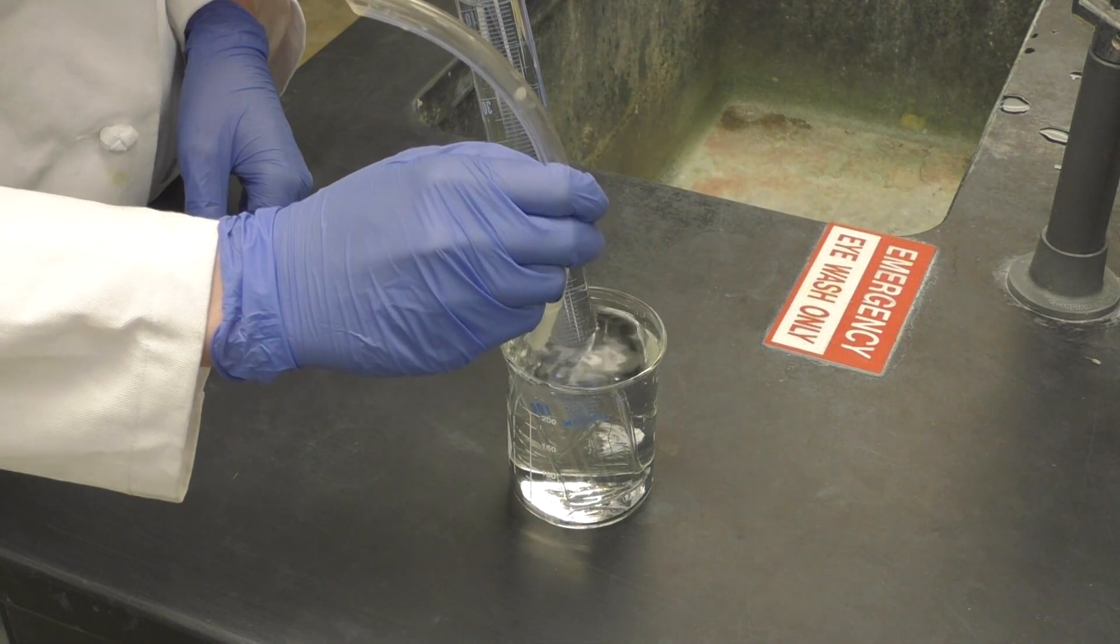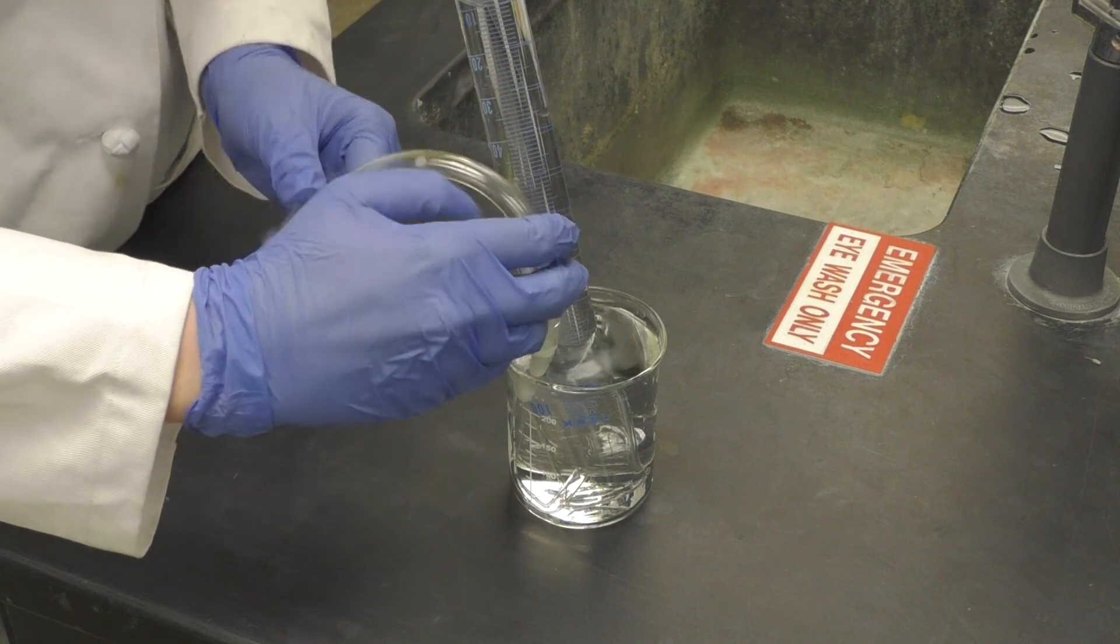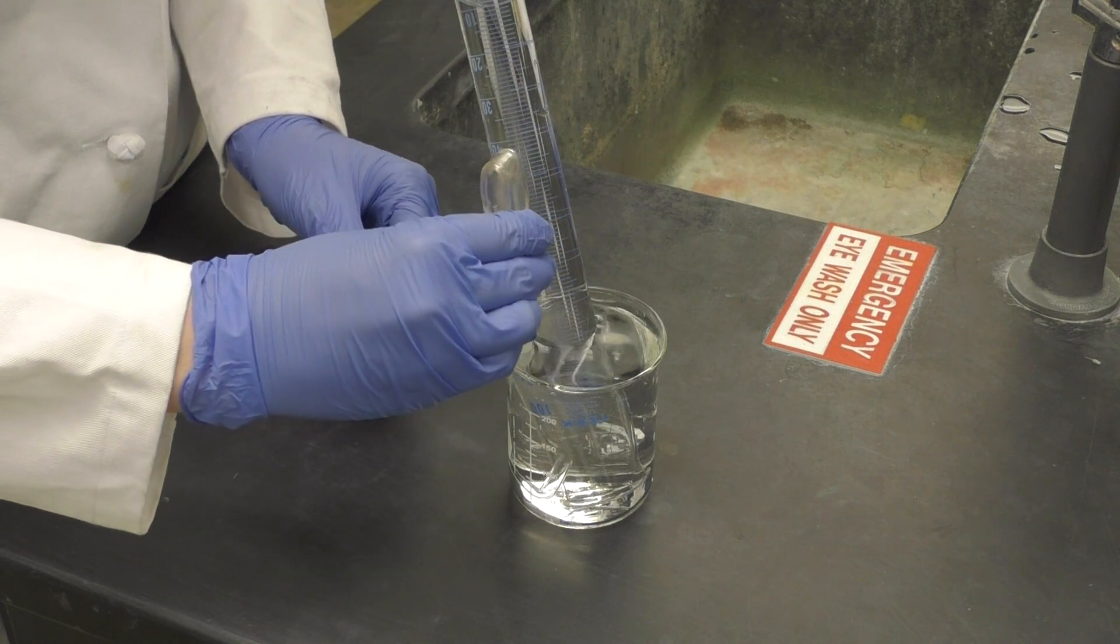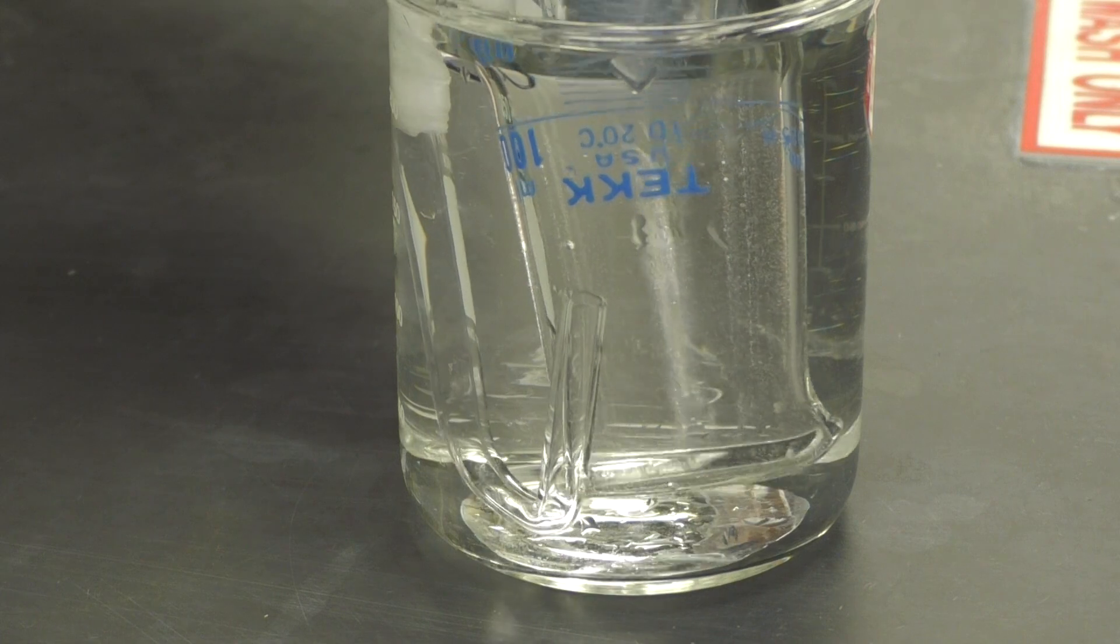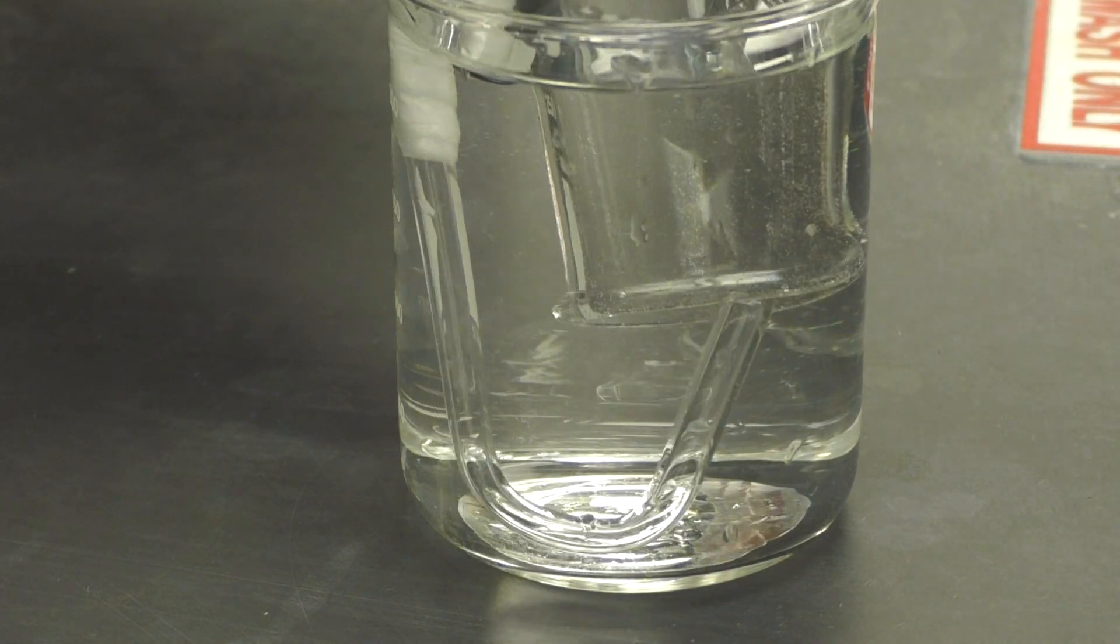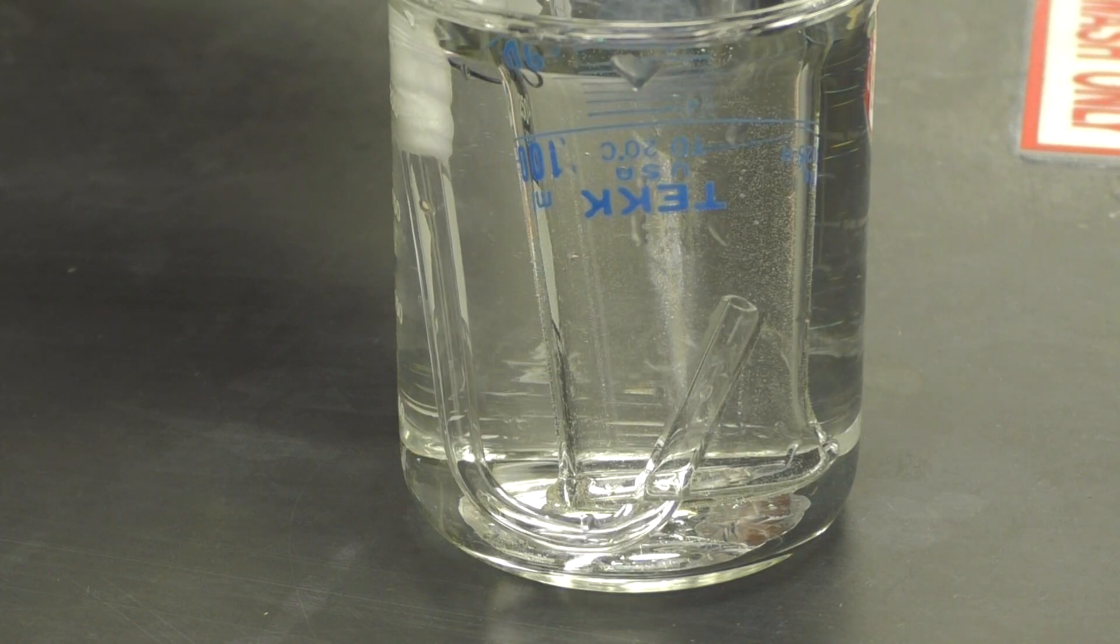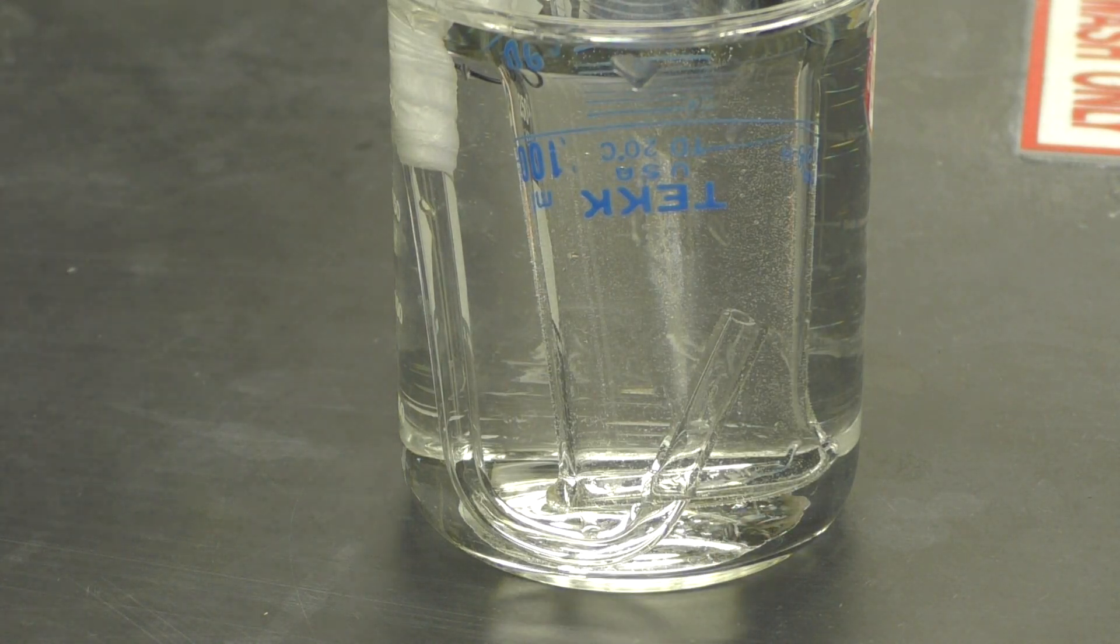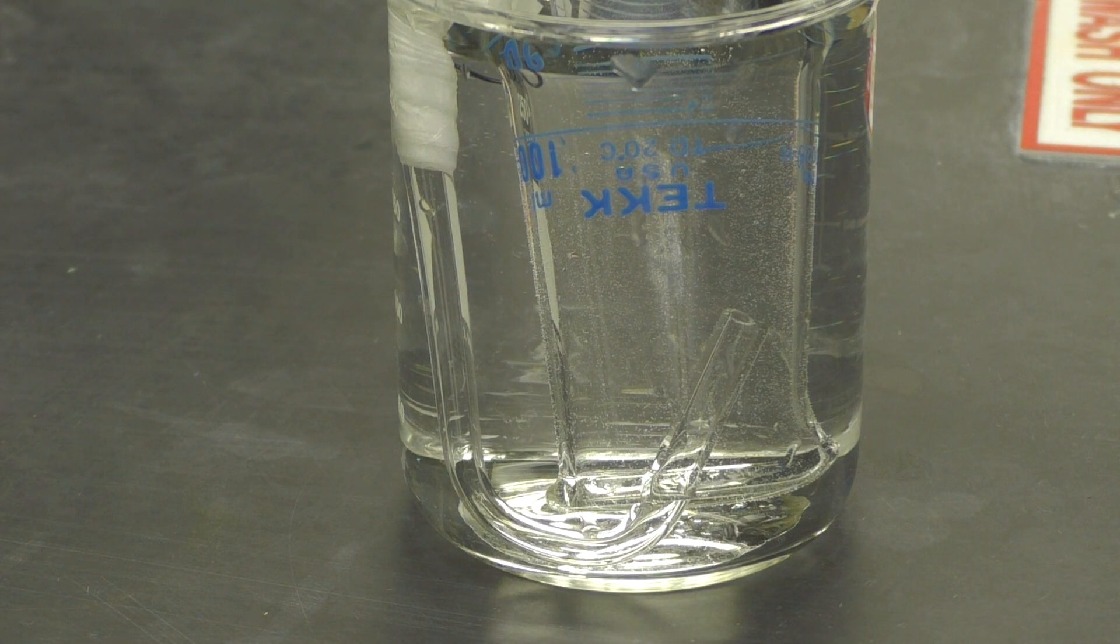Next, place your J-tube into the beaker and squeeze the plastic tubing once to remove some air from the tube. Then carefully raise the inverted graduated cylinder and slide the end of the J-tube into the opening of the cylinder. Try not to lift it too far as you may introduce air into the graduated cylinder.